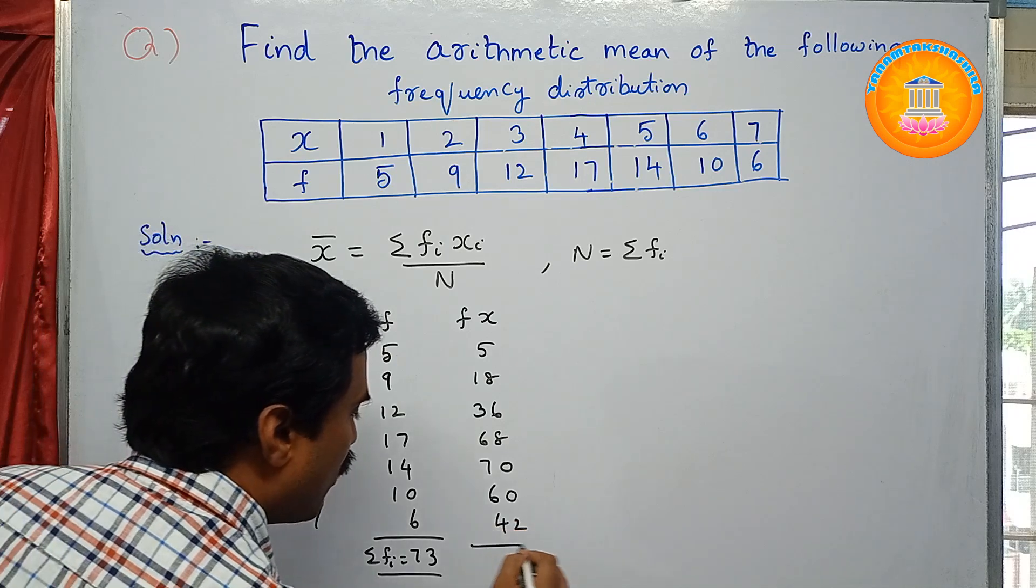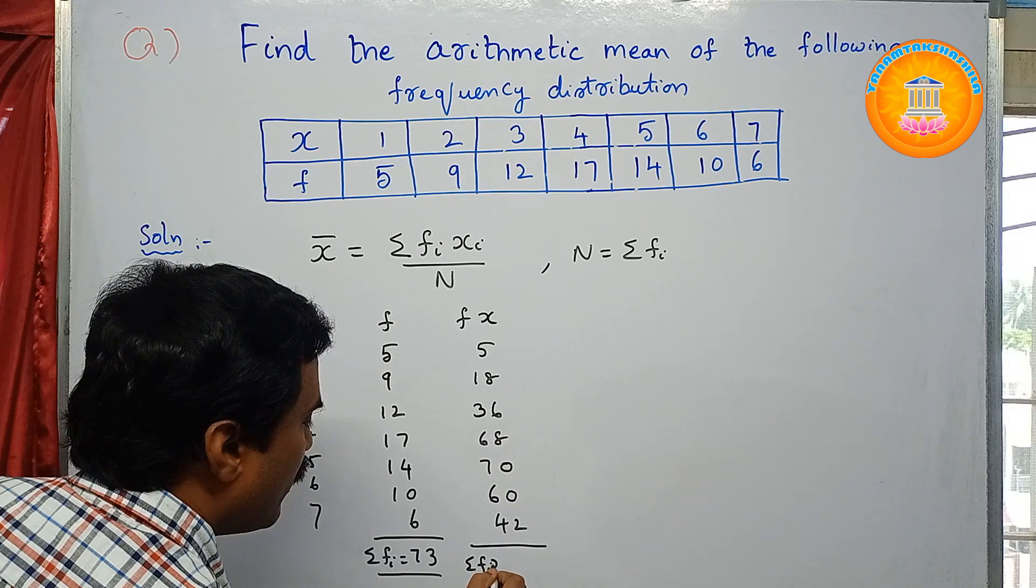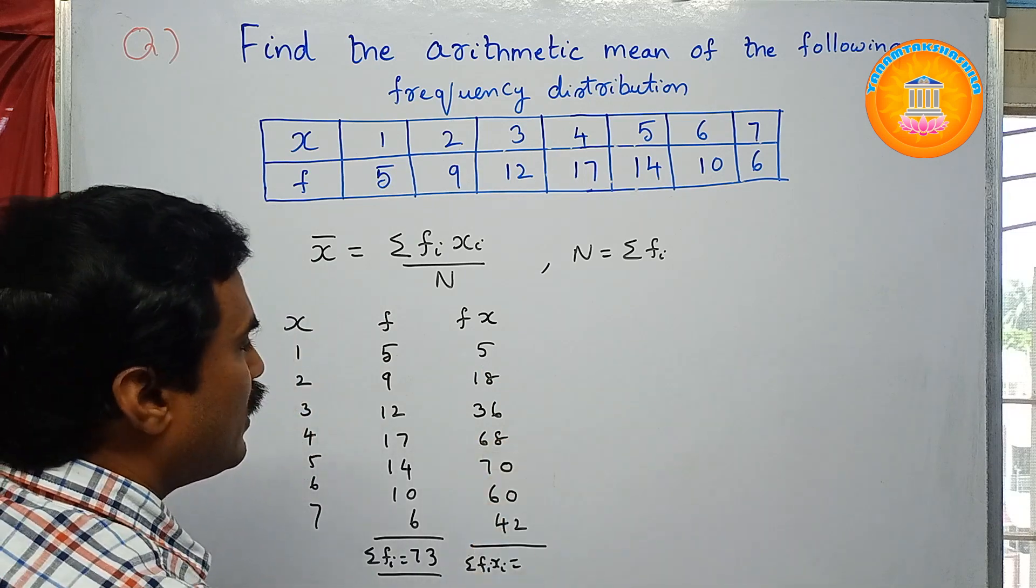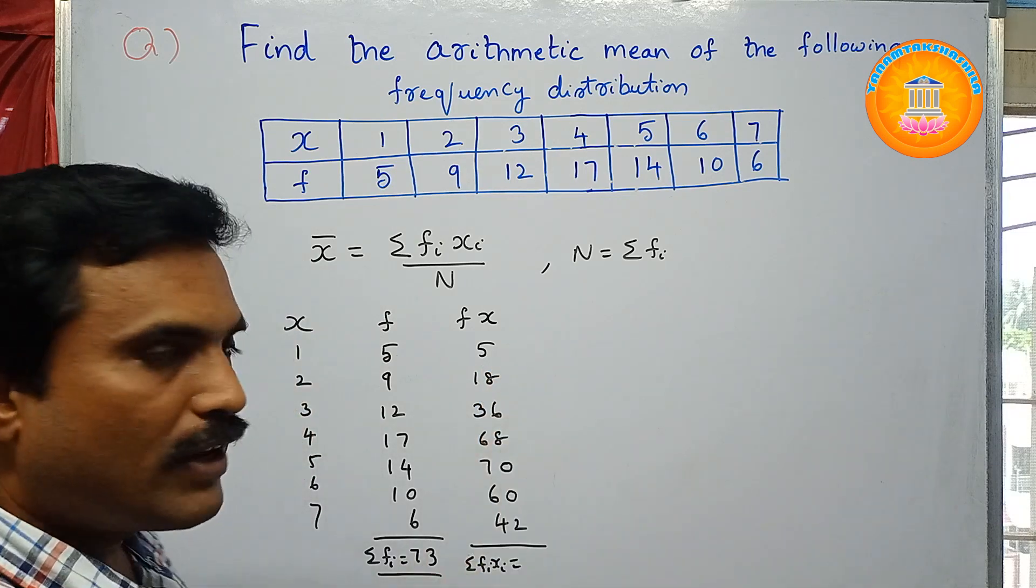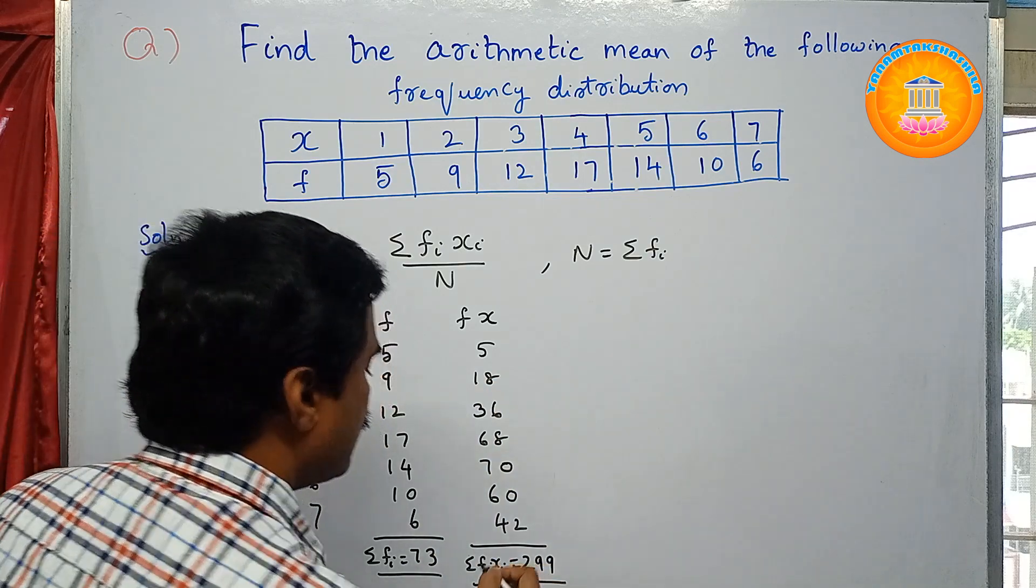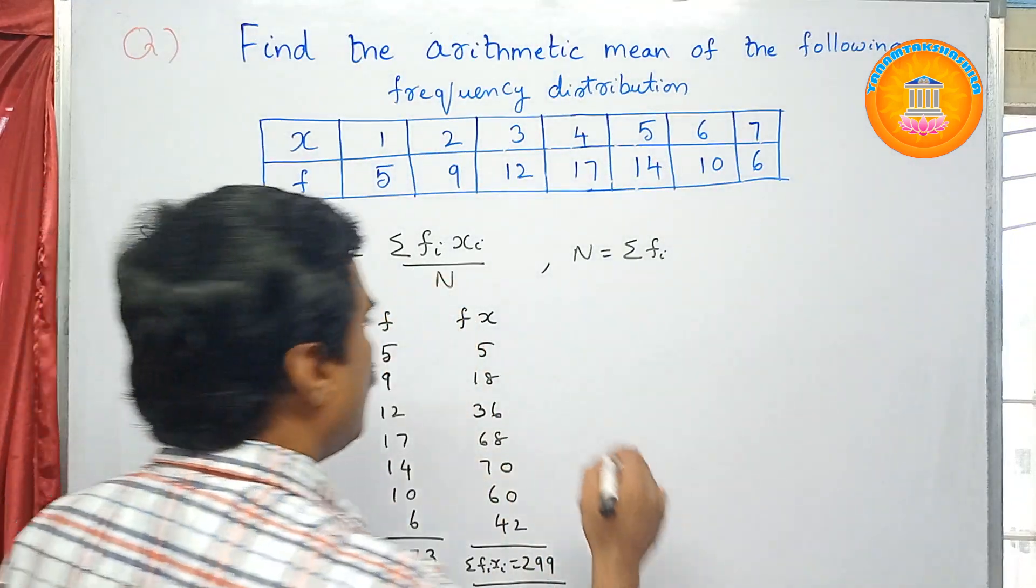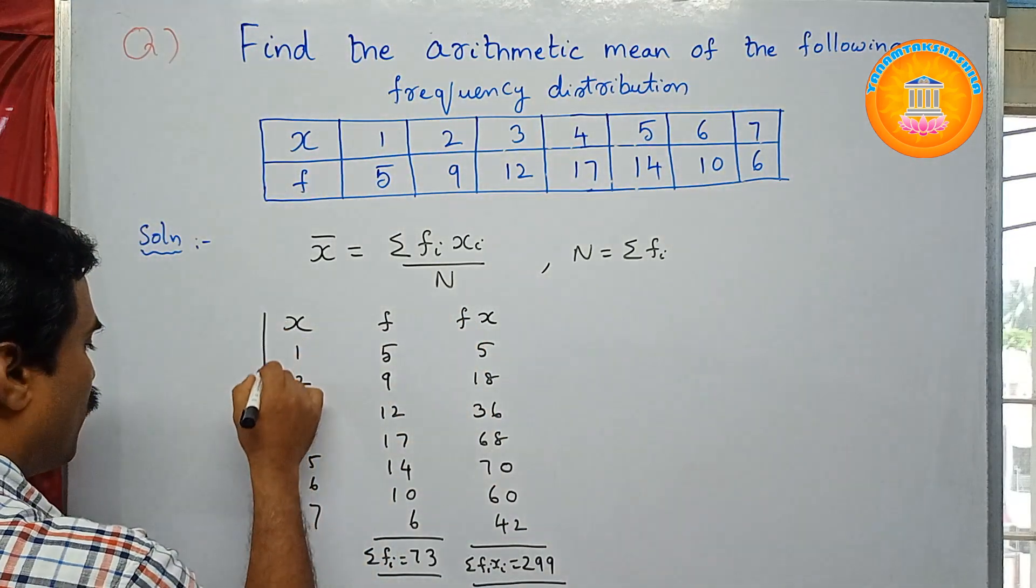So you have to add all these values, that is nothing but Sigma f_i times x_i. What you will get is, when you add all these values, you will get 299. So this is Sigma f_i times x_i.